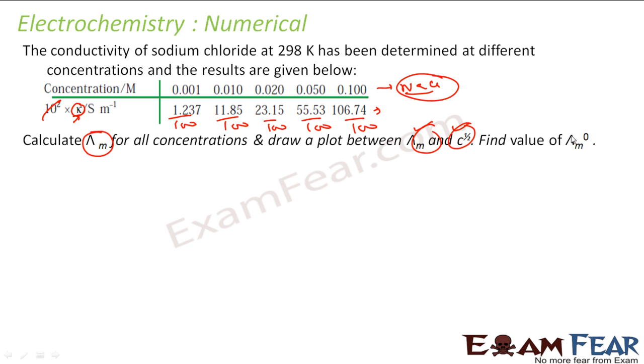We need to plot λm against √C and find the value of λm⁰. So let us find λm for all concentrations, find the √C values, and then determine λm⁰ from the graph.